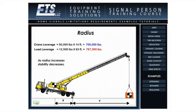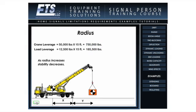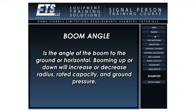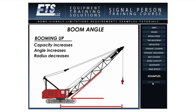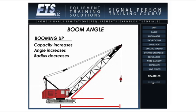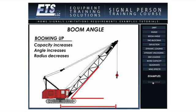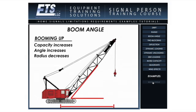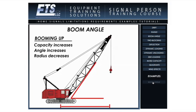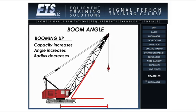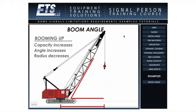If at the end of the video you wish to view it again, you may do so by clicking the play button. When you are finished with this demonstration, simply select another limitation from the list on the right-hand side of the screen. When you have completed and have comfortable knowledge of all 11 limitations and their examples, you may move on to another section of the program by selecting another button from the menu bar.